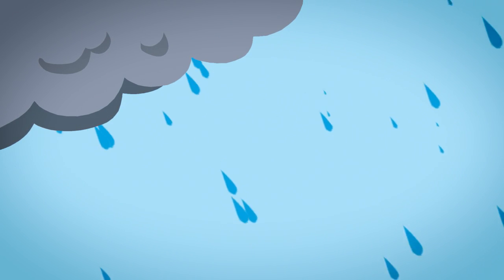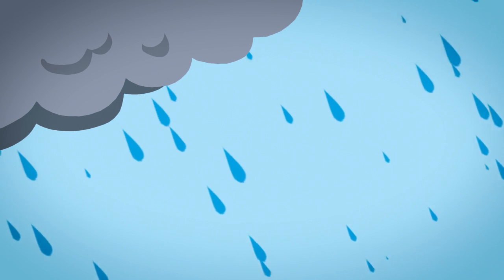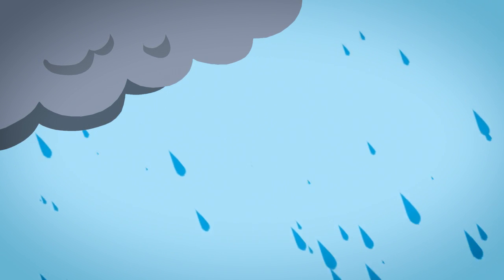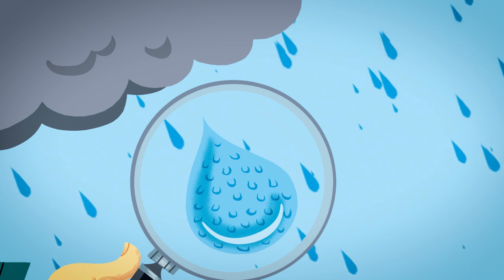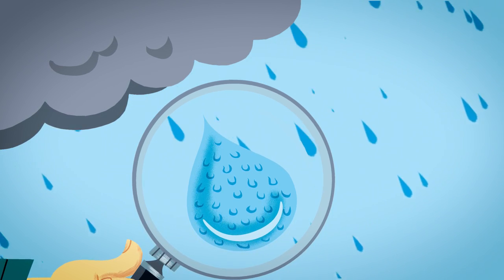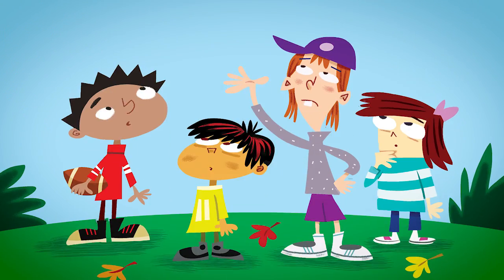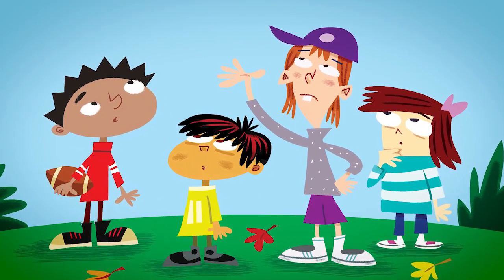Every cloud is made up of water droplets, or if the temperature is below freezing, ice crystals. The water droplets that form clouds are very tiny. How tiny? Well, it takes about a million cloud droplets just to make one single raindrop, so it takes billions of droplets to form one cloud.